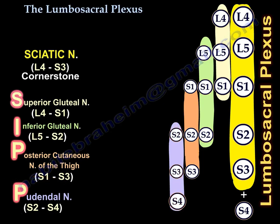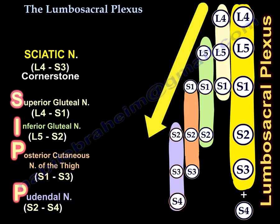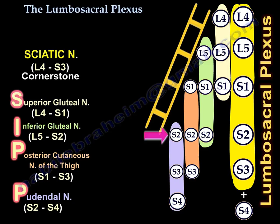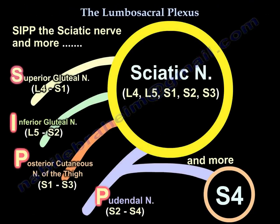If you draw a line among the branches, you find that each successive branch starts one nerve root lower than the previous one, and every branch has three nerve roots. You can remember this with the mnemonic SIP.